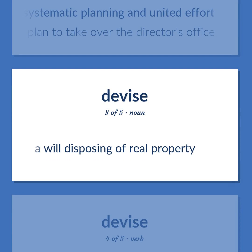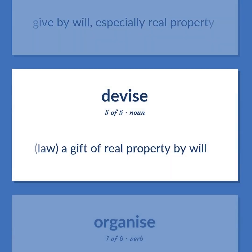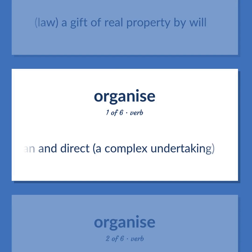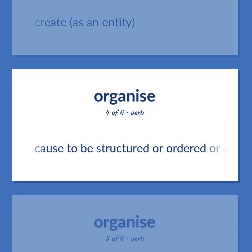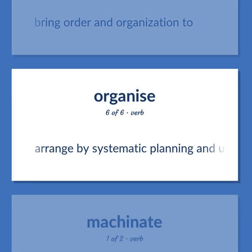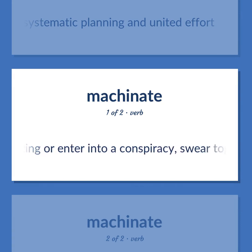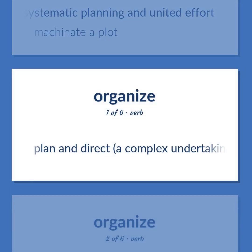Devise: a will disposing of real property. Also: to give by will, especially real property. Law: a gift of real property by will. Also: to plan and direct a complex undertaking. Machinate: to form or join a union. Also: to create as an entity. Also: to cause to be structured or ordered or operating according to some principle or idea. Also: to bring order and organization to. Also: to engage in plotting or enter into a conspiracy; swear together. Example: machinate a plot.